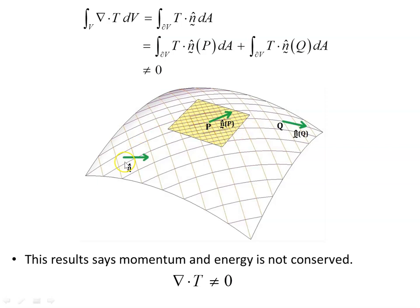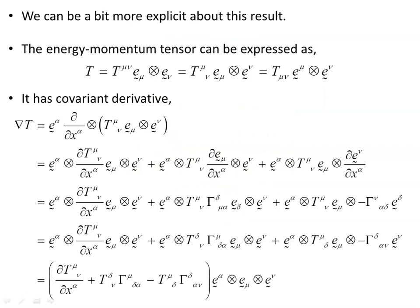If you think about it, an object moving on this surface will have its velocity, direction, and magnitude change. At one point it's going to have a different velocity vector than at another point, simply because the direction of those vectors changes at different points on a manifold. In flat spacetime that doesn't happen. Let's be a bit more explicit about this result and look at the components of the energy-momentum tensor.